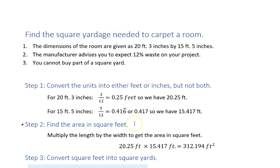Now I have these both in feet, and I want to find the area in square feet. All I do to get that is multiply the length times the width, and that gives me something that I rounded to three decimal places: 312.194 square feet, because it's a two-dimensional area.